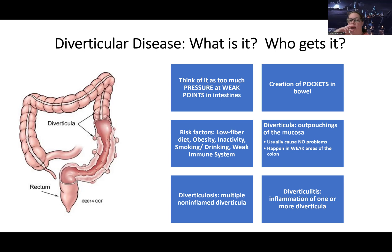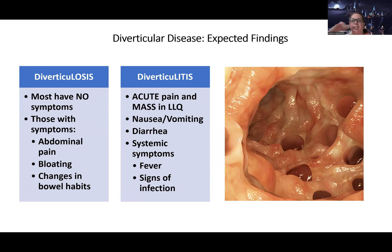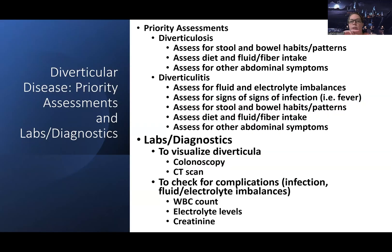The pockets can become inflamed because food gets stuck in them, or they get irritated from diet and other things. With diverticulosis, normally there are no symptoms — just a bunch of pockets. Those that do have symptoms might have some abdominal pain, bloating, or changes in bowel habits. With diverticulitis, because this is a left lower quadrant issue involving the descending colon, they'll have acute pain and a mass-like feeling in the left lower quadrant — it's the inflamed diverticula creating that sensation. They can also have nausea, vomiting, diarrhea, and systemic signs of infection like fever.